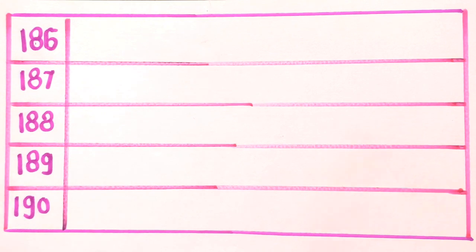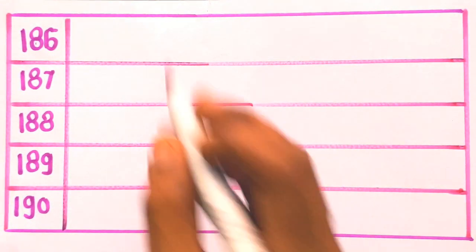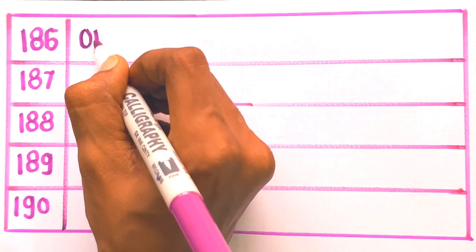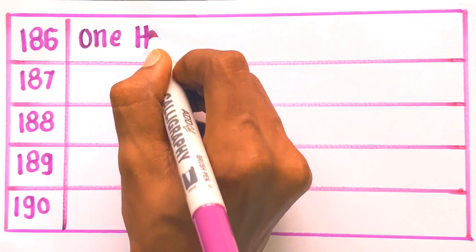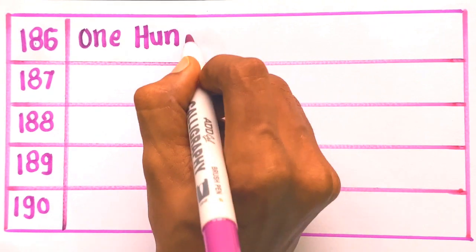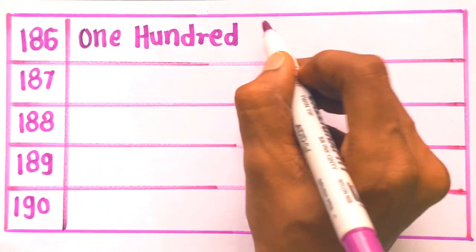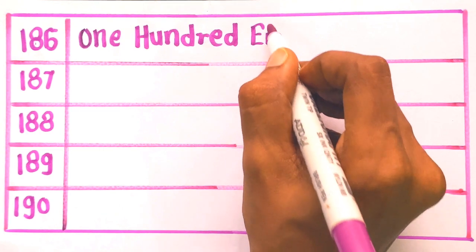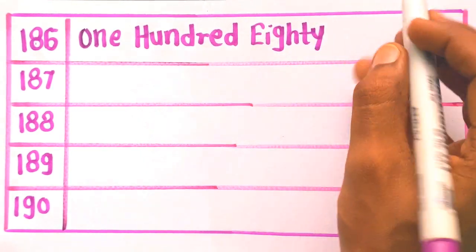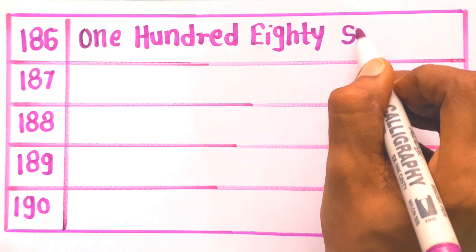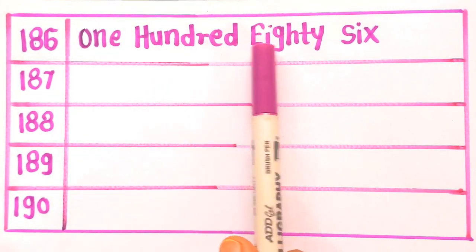Next number is 186: O, N, E — 1. H, U, N, D, R, E, D — 100. E, I, G, H, T, Y — 80. S, I, X — 6. One hundred eighty six. 186.